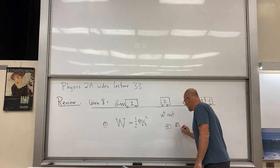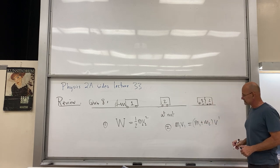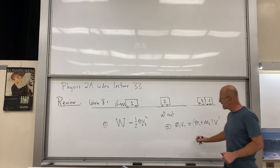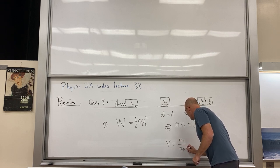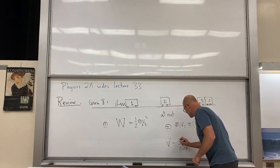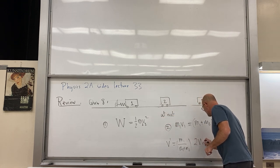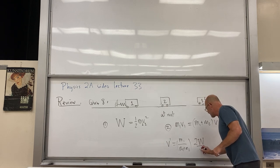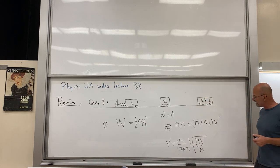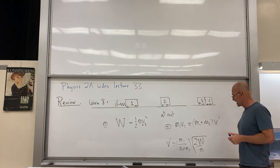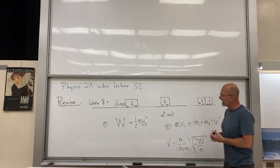The spring contains a certain amount of potential energy W, and that turns into kinetic energy: W = ½ m₁v₁². That's the first equation. After the collision, conservation of linear momentum gives m₁v₁ = (m₁ + m₂)v′. Solving for v′: v′ = (m₁/(m₁ + m₂)) × √(2W/m₁). That's the answer to quiz 8.